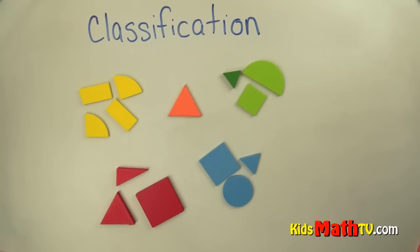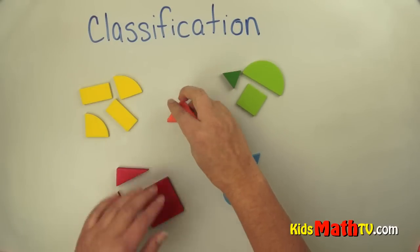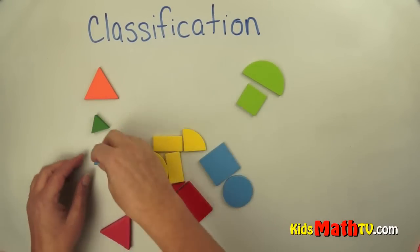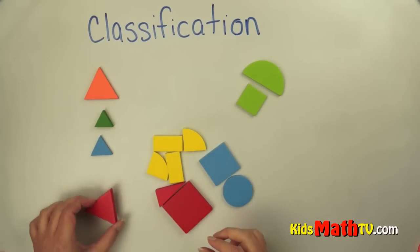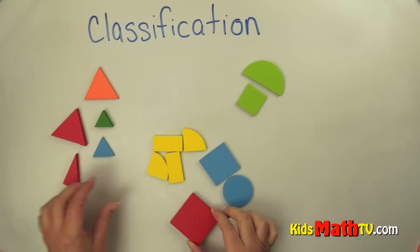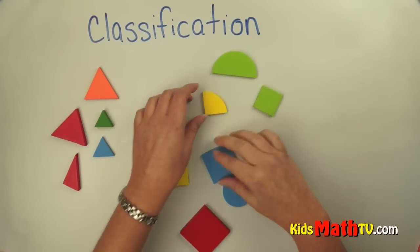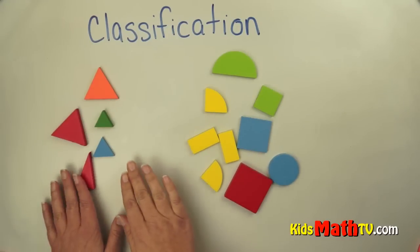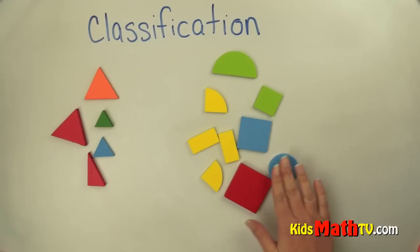Okay, we can also classify by triangles and not triangles. So I see this is a triangle, this is a triangle, that's a triangle, that's a triangle. This is not. This is a triangle. And all of these shapes are not triangles. So we have one group of triangles and one group that is not triangles.